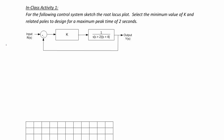Since there are three poles, we know that we are going to have three loci. They are going to start at 0, negative 2, and negative 4. We're going to plot those on our horizontal axis. We know that our real axis segments have to be to the left of an odd number of poles and zeros, so we're going to have two real axis segments: one between 0 and negative 2, and one to the left of negative 4.